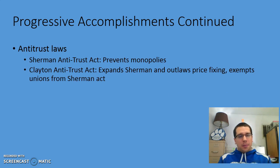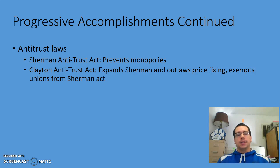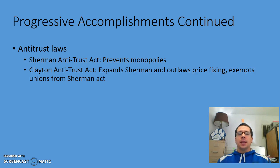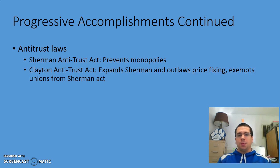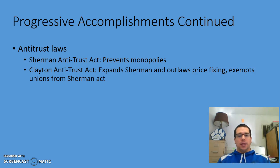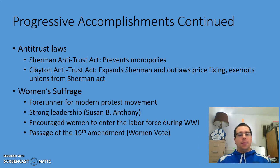Antitrust laws were also developed — not about personal trust, but about preventing large business monopolies. The Sherman Antitrust Act prevented monopolies, stopping Rockefeller from owning 90% of the oil industry or Carnegie controlling all the steel. When big business owners argued labor unions were also trusts, the Clayton Antitrust Act expanded on Sherman, outlawing price-fixing while also exempting unions from the Sherman Act.